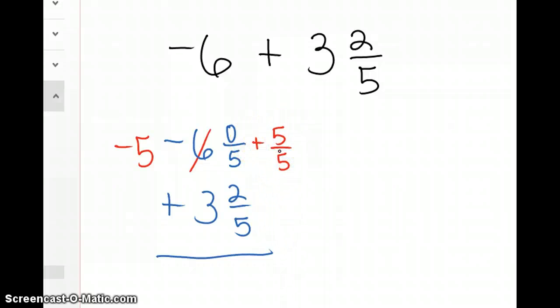So 0 fifths plus 5 fifths equals just 5 fifths. So basically, I've changed this problem to negative 5 and 5 fifths, which is the same thing as negative 6, plus 3 and 2 fifths.